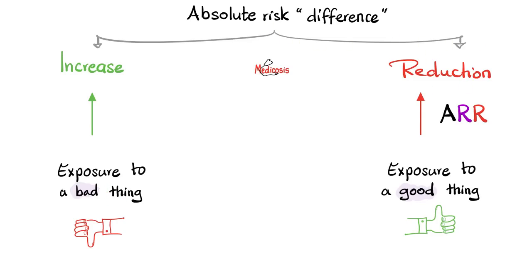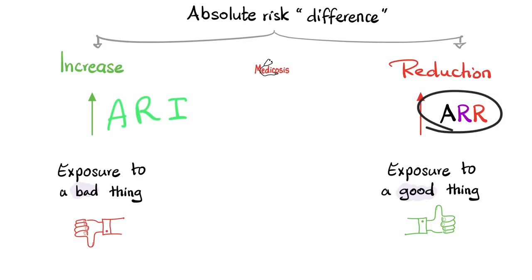Or it could be absolute risk reduction — such as applying a seat belt before driving, locking your front door, vaccinations, prophylactic therapy, or regular maintenance for your car. All of these things are supposed to make you safer, i.e. reduce your risk. We call this absolute risk reduction rather than absolute risk increase, and we talked about absolute risk reduction in a previous video.